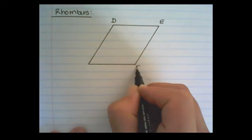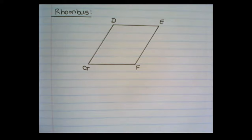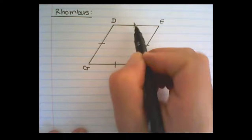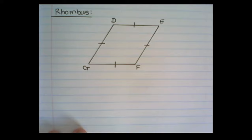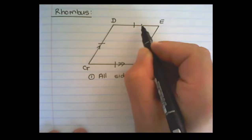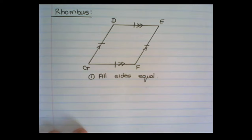The next figure is called a rhombus. With a rhombus, all four sides are equal in length — that is the main property of a rhombus. Opposite sides of the rhombus are parallel, and it has the same properties as a parallelogram.